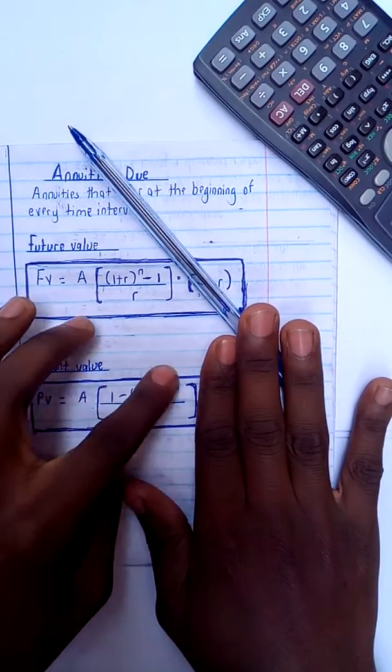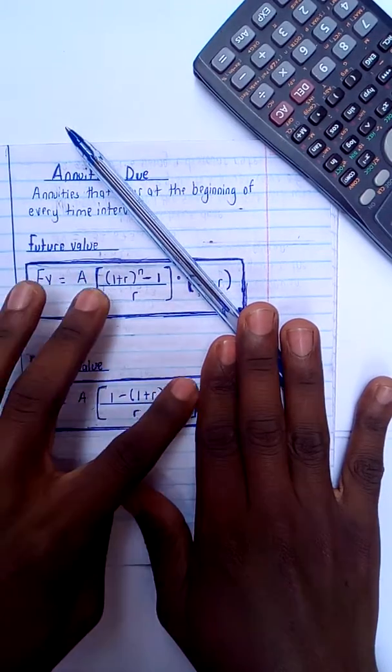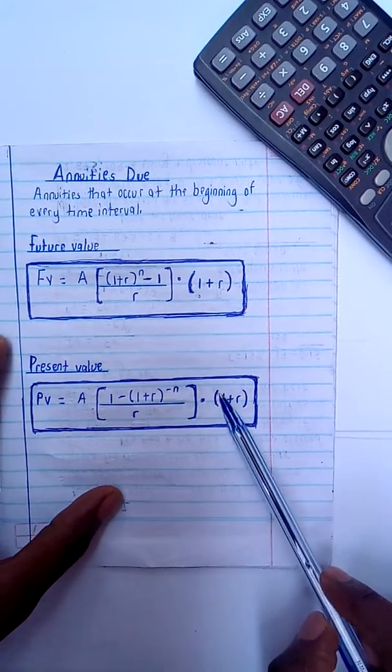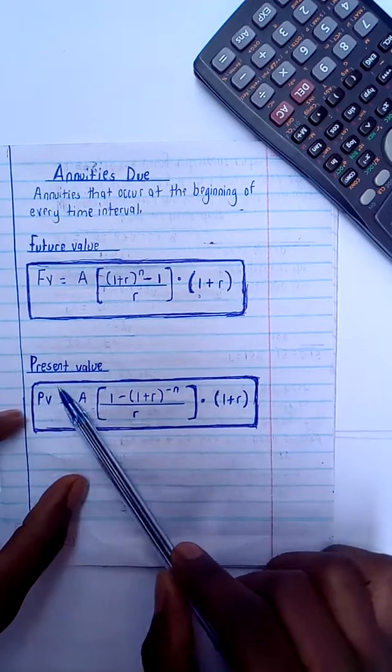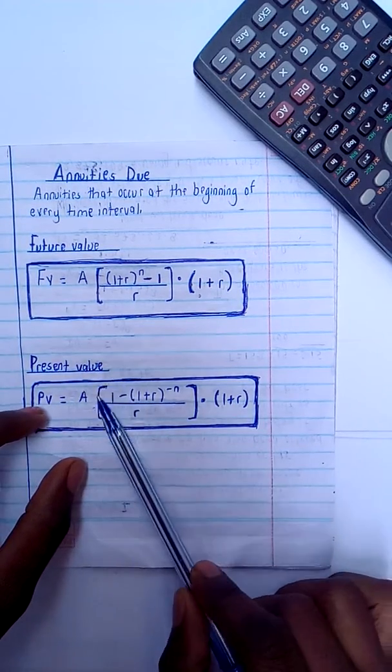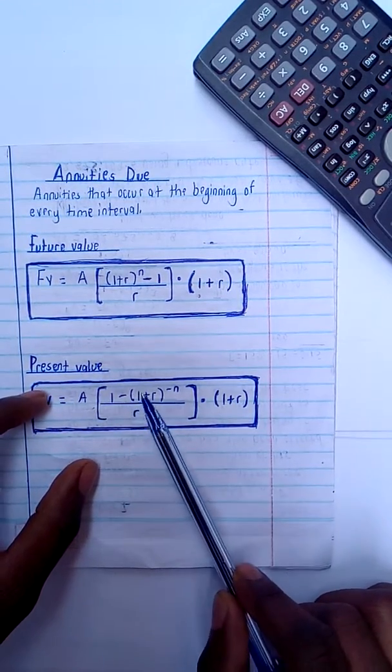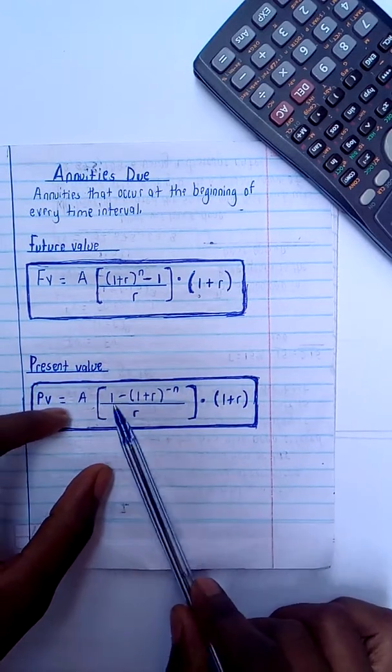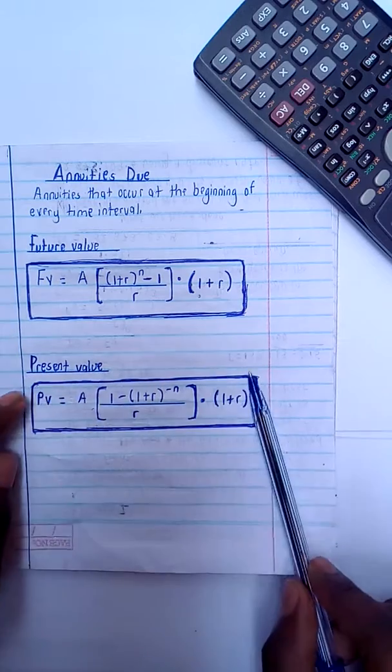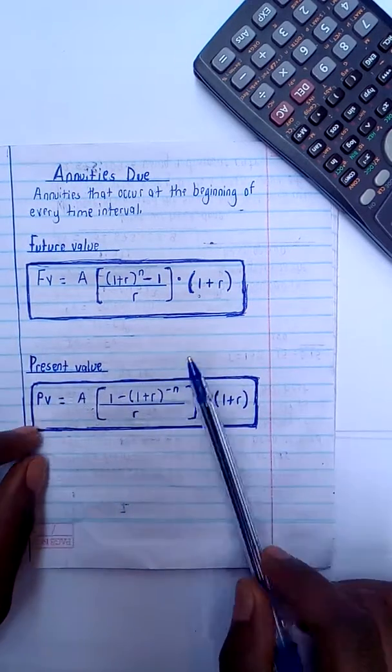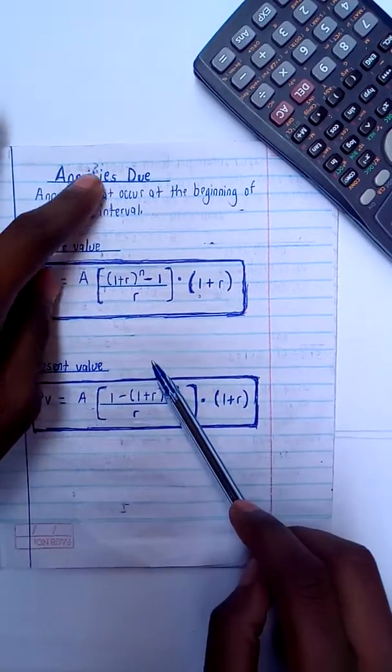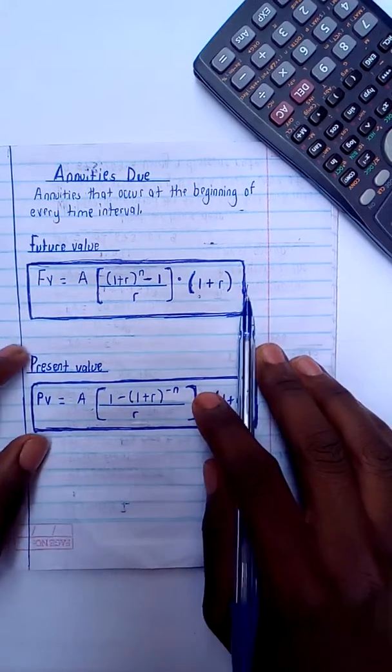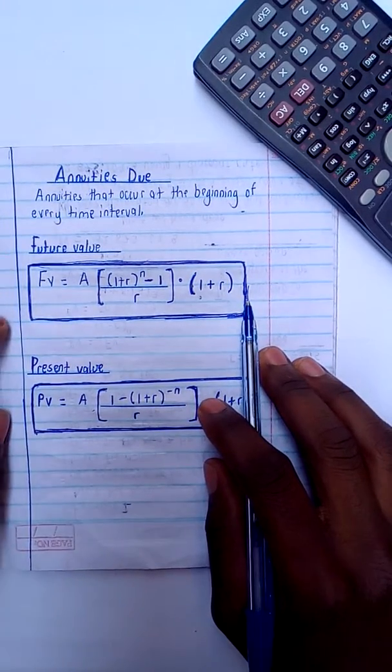You write the formula of the ordinary annuity when finding its present value, and then you add there the bracket one plus r. The same is: PV equals the annuity times square brackets, one minus bracket one plus r to the power negative n, divided by r. And from this, this is it. This will be the complete formula for the annuities due. So thank you so much for watching. Make sure you subscribe.